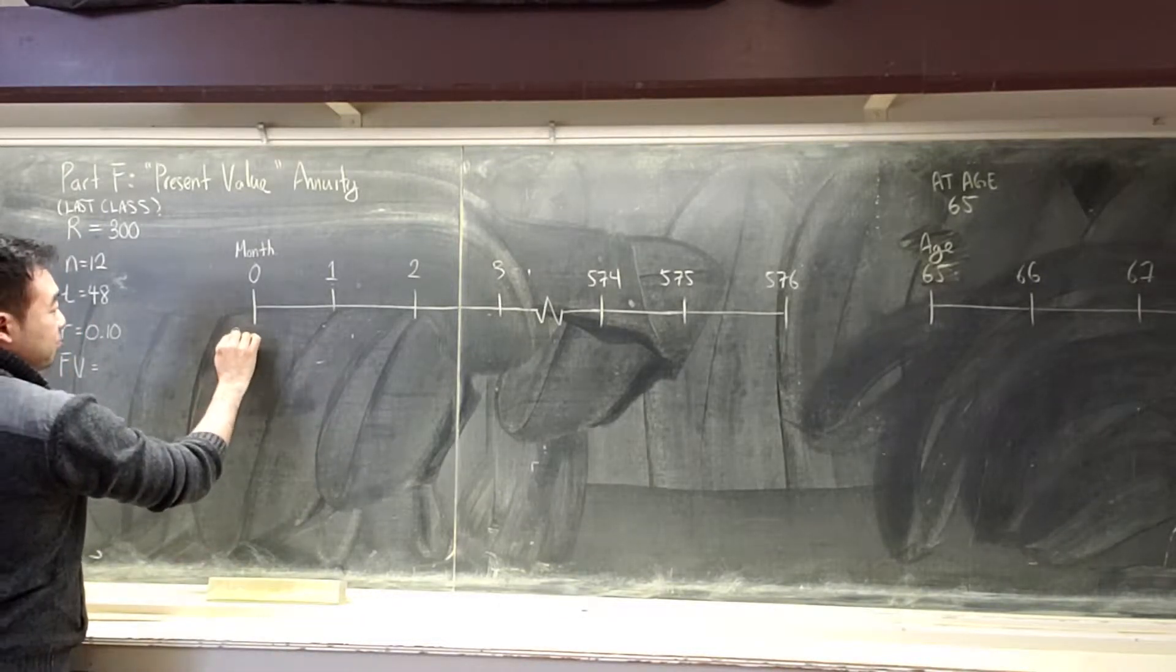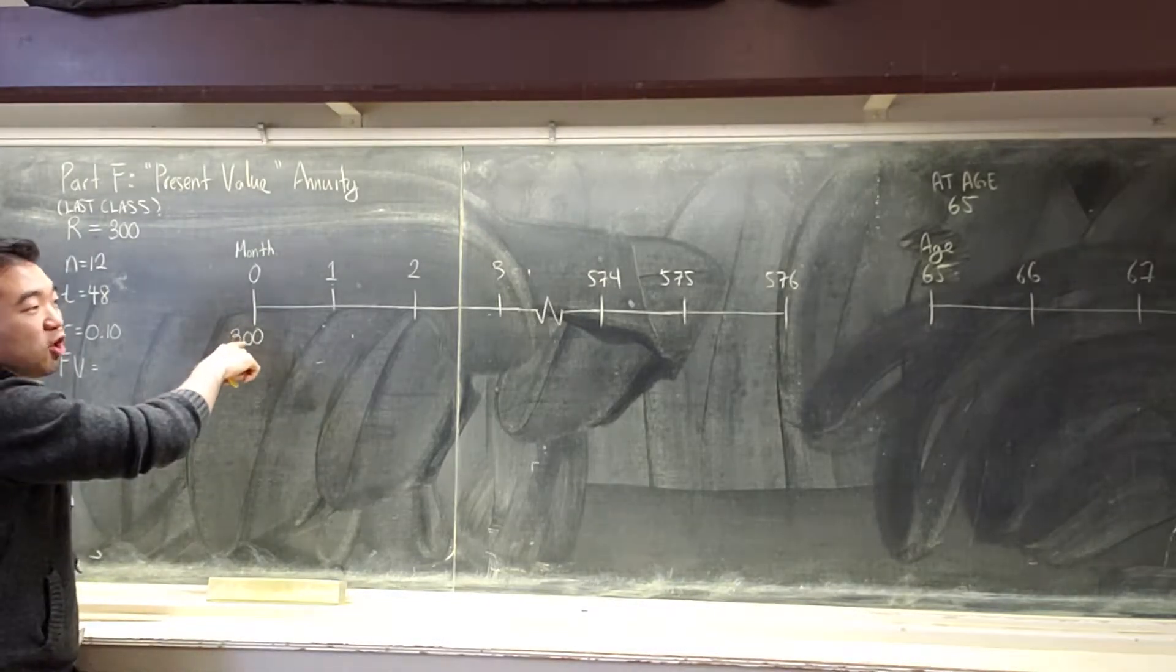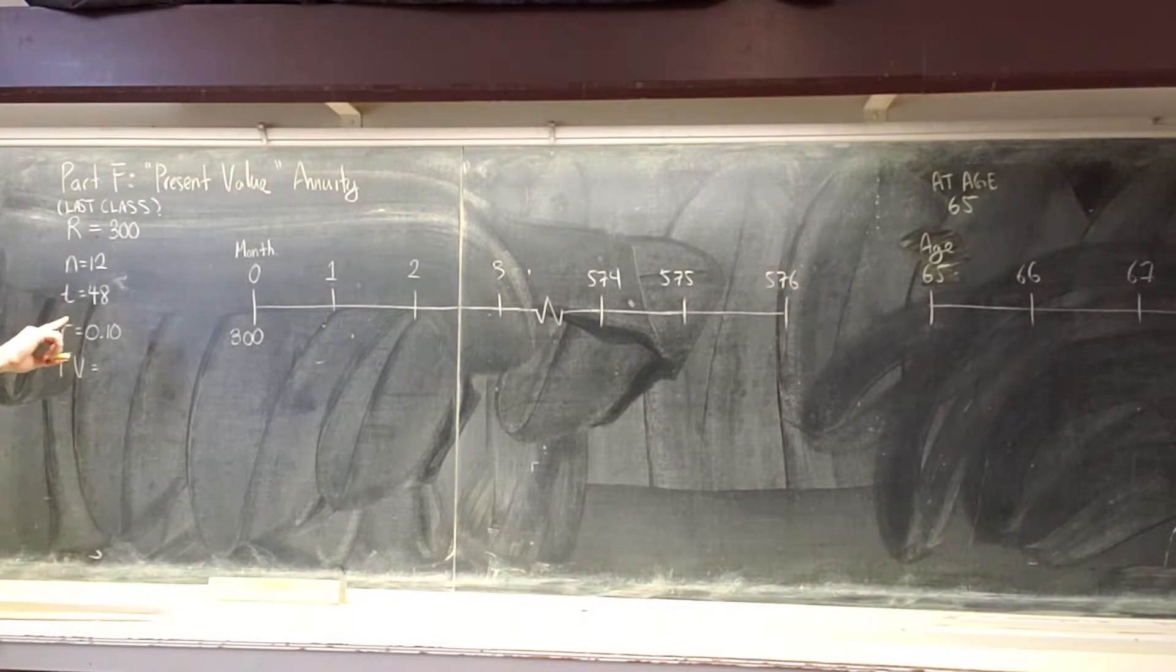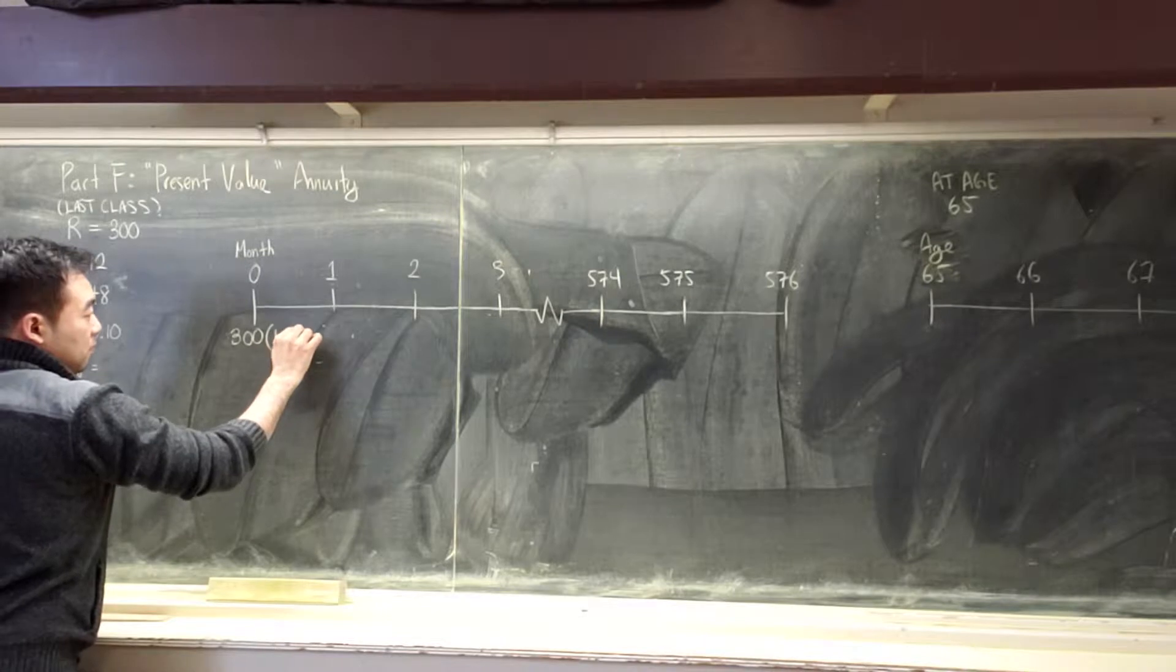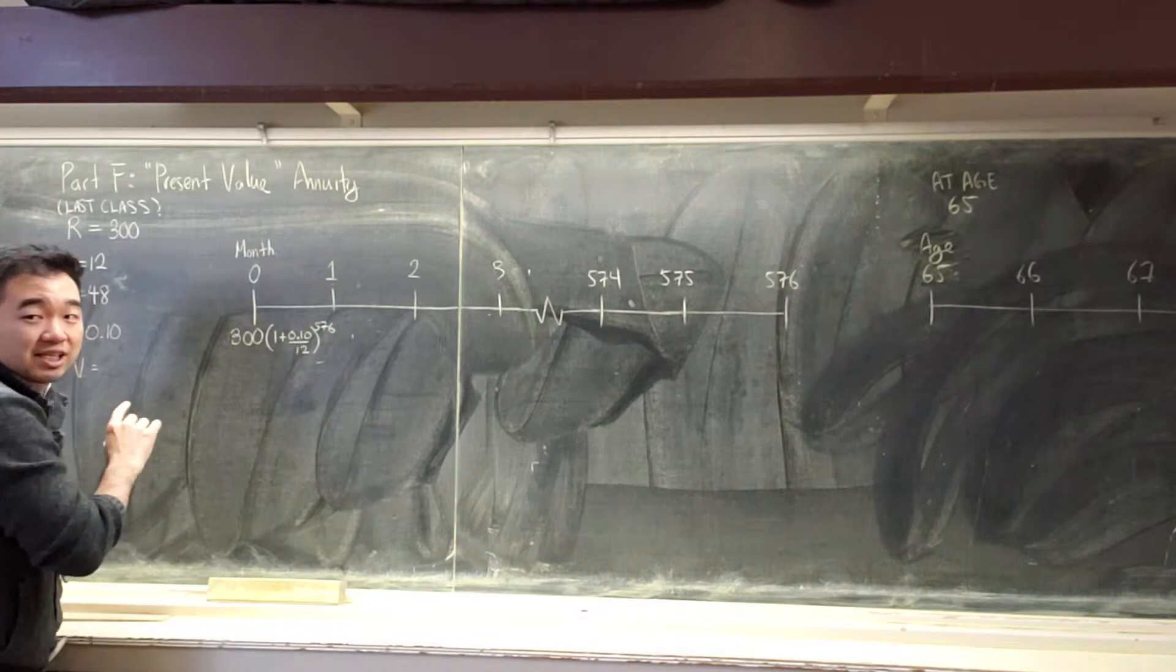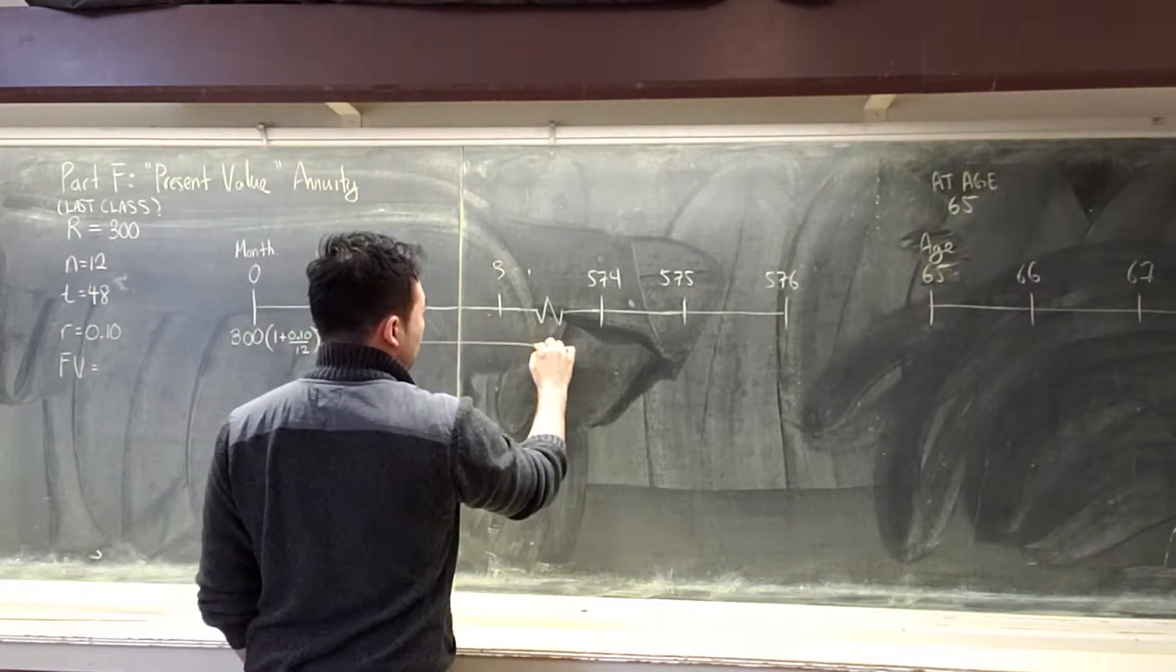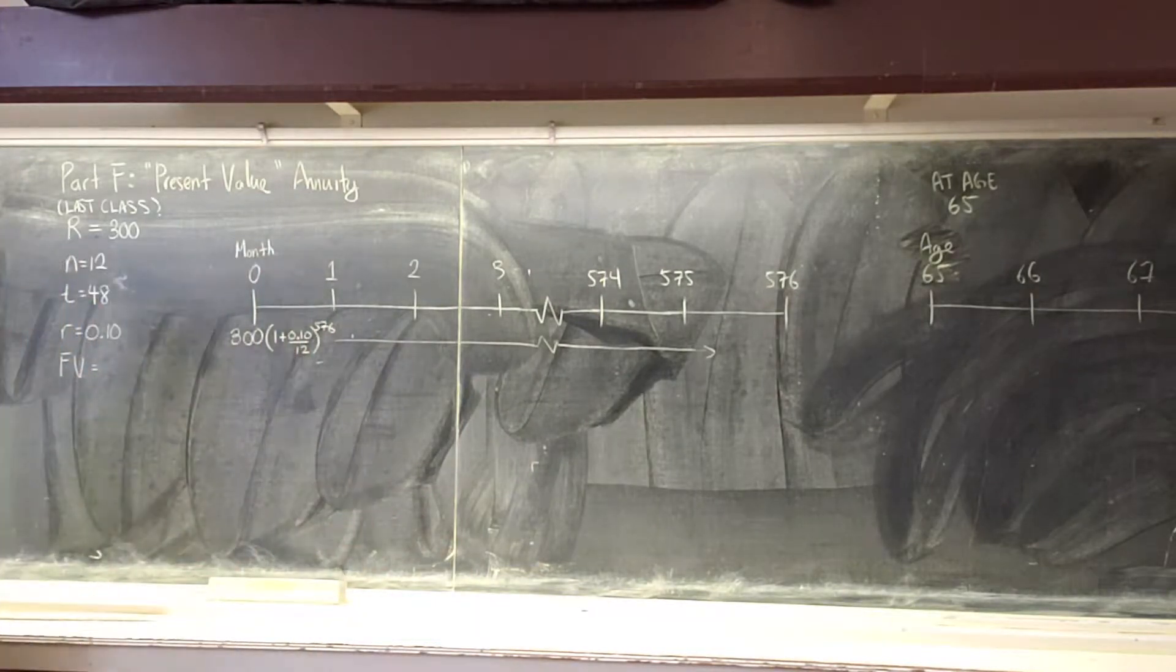So in the first month, I put in $300, right? And how long am I waiting again? 48 years, right? So this is going to be multiplied by this interest rate for 576 months. With me? Someone really quickly plug in the calculator. I would like to know what that turns into at the very end of my 48 years.